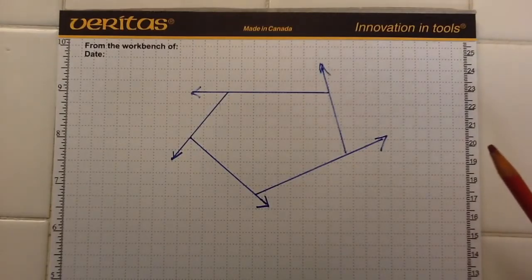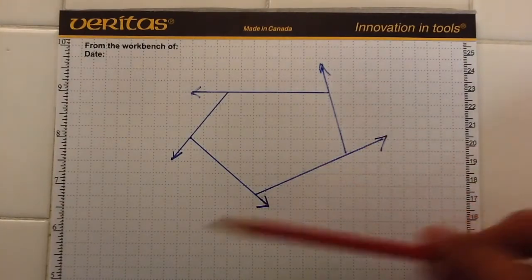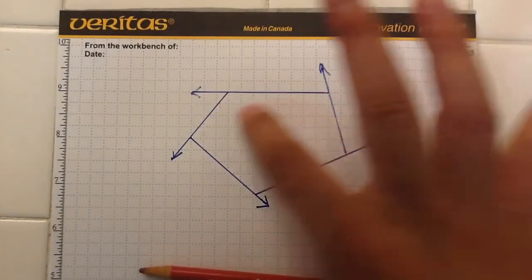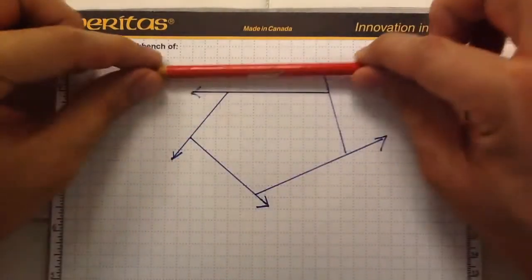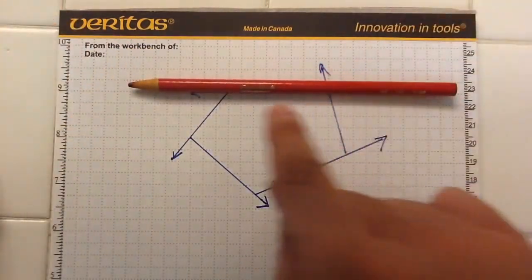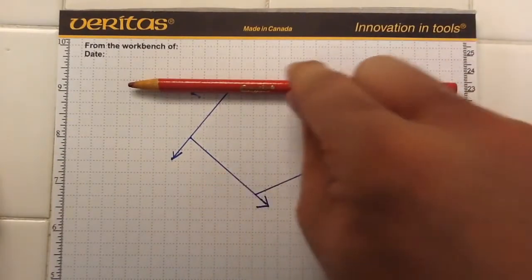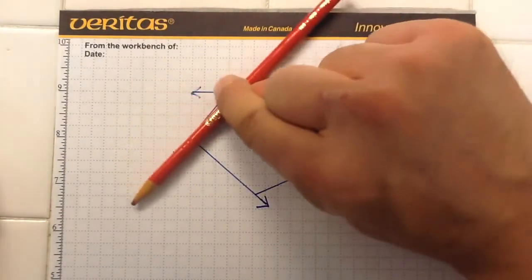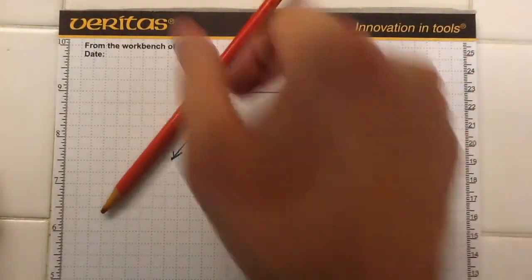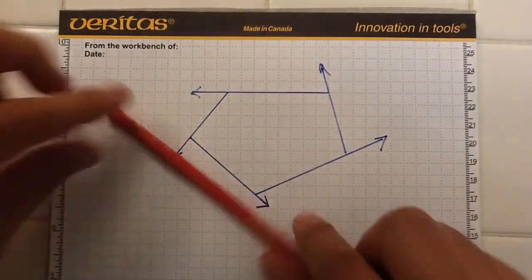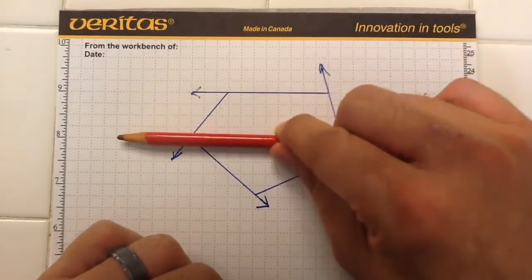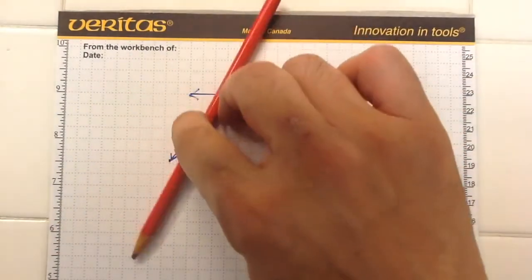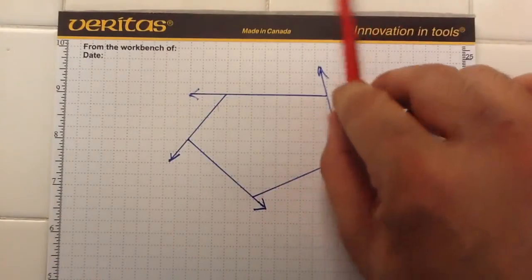All right, so to better explain that description, let's model it once again in real life. Here's a pentagon, which I've already drawn in the exterior angles. And so if I take a pencil and I line it up along one of the sides, and then I start moving that pencil so that it lines up with the next side, then the next one, then the next one, and then the next one, and then back again.